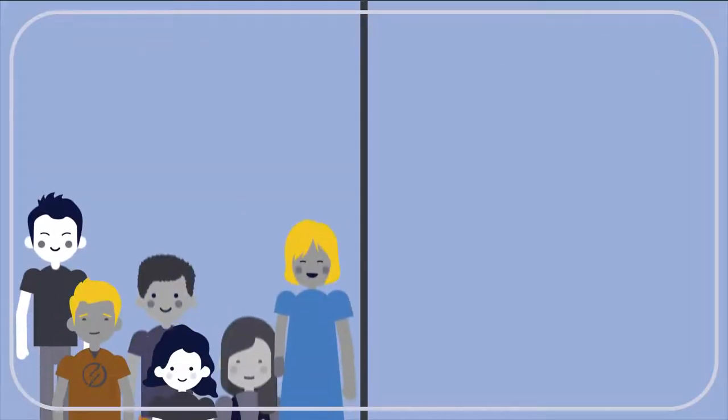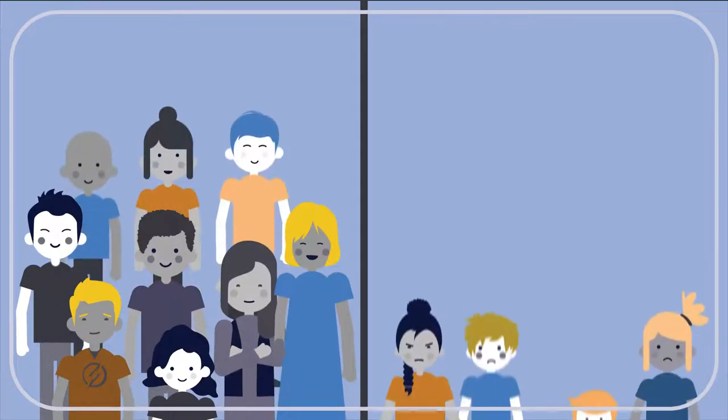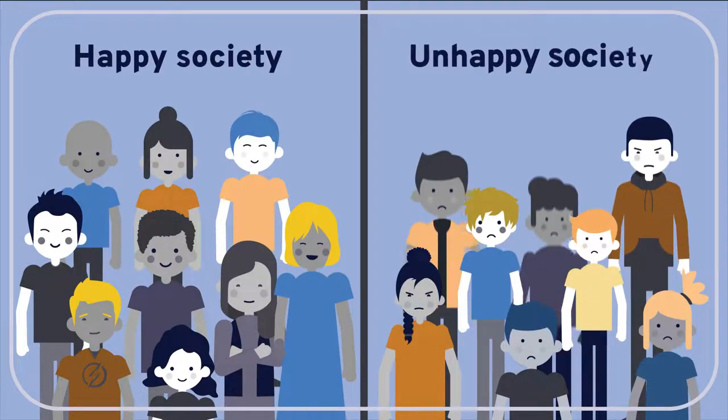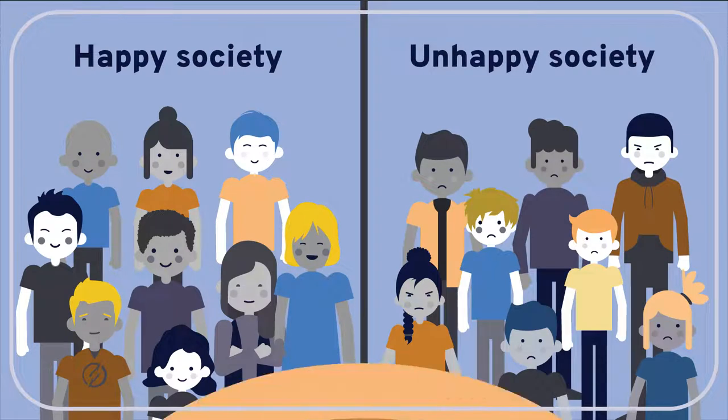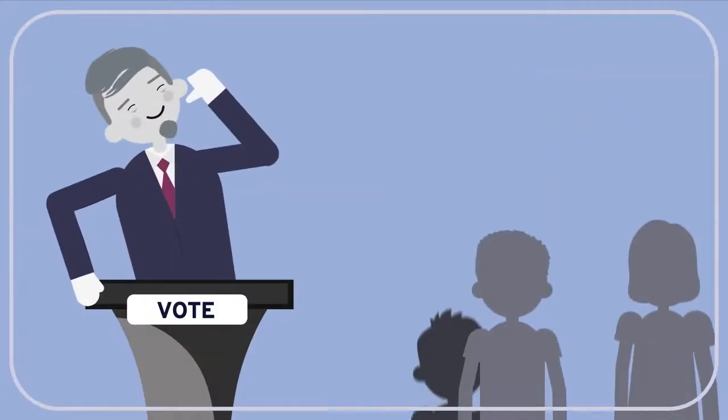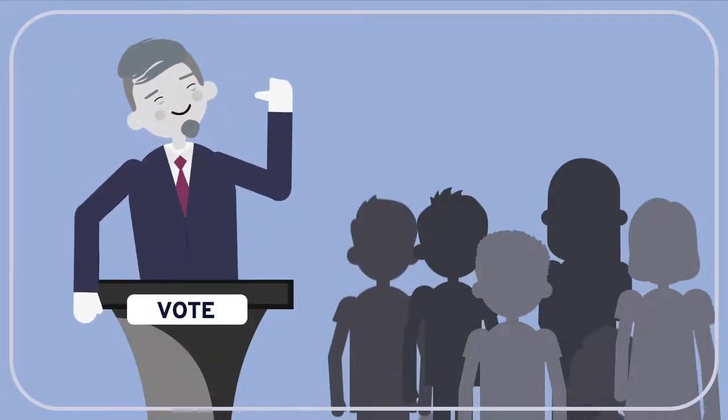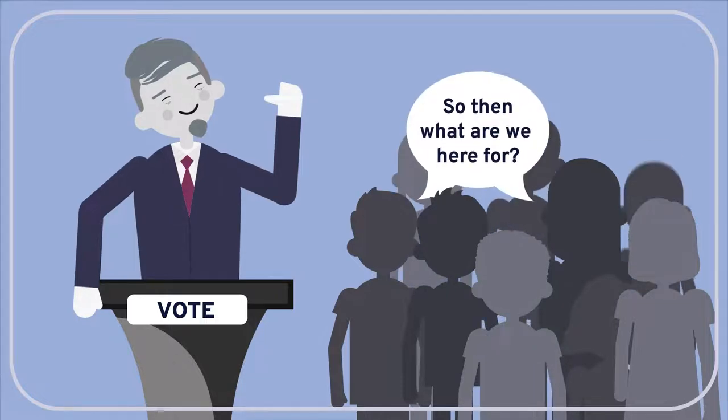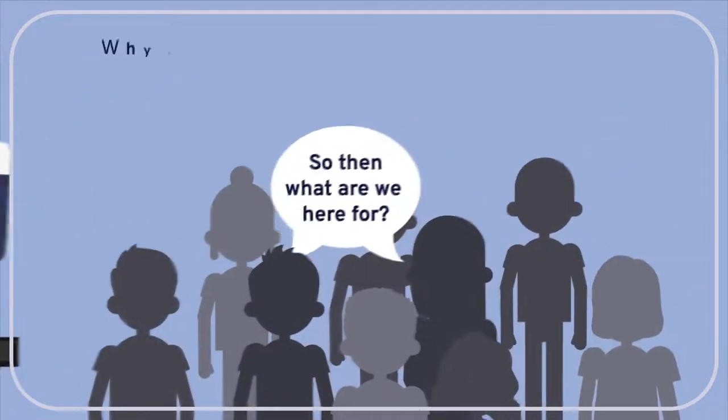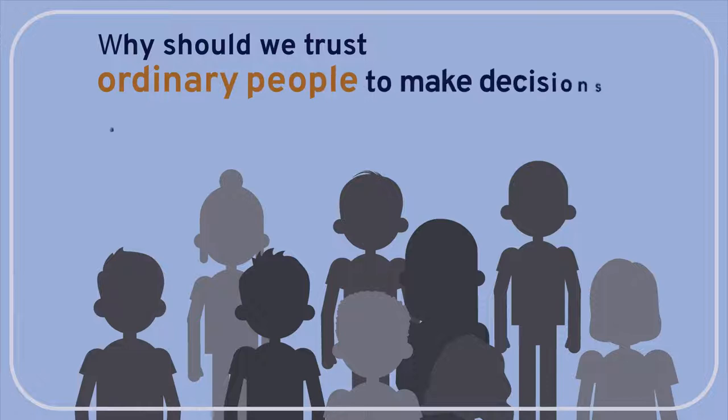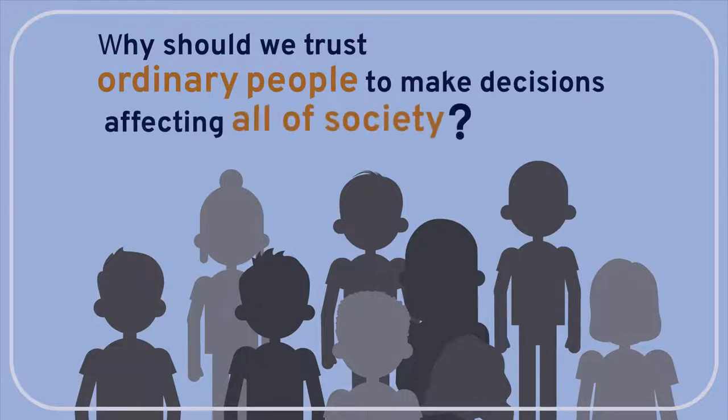Governments routinely make decisions and take actions with very high stakes. They're likely to either benefit all of society or to harm all of society. So we'd like to be confident that the people making the decisions know what they're doing. So then why let the people themselves make the decisions? Why should we have any confidence in the ability of ordinary citizens to make wise decisions affecting all of society?